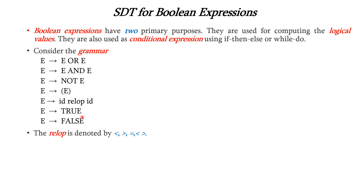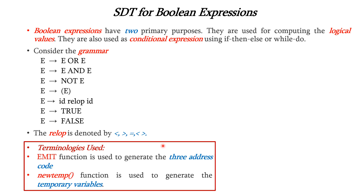The relational operator can be either less than, greater than, equal to, or not equal to. Before going to the semantic actions, let us see the terminologies used. The emit function is used to generate three-address code, and the newtemp function is used to generate temporary variables.